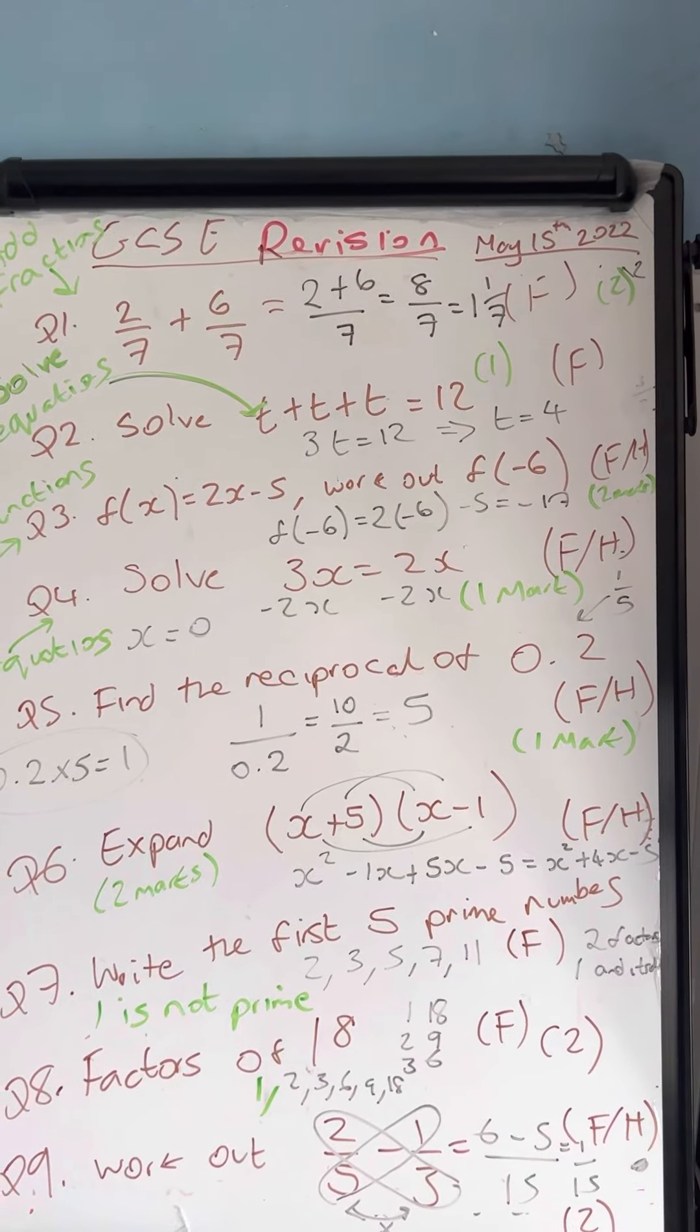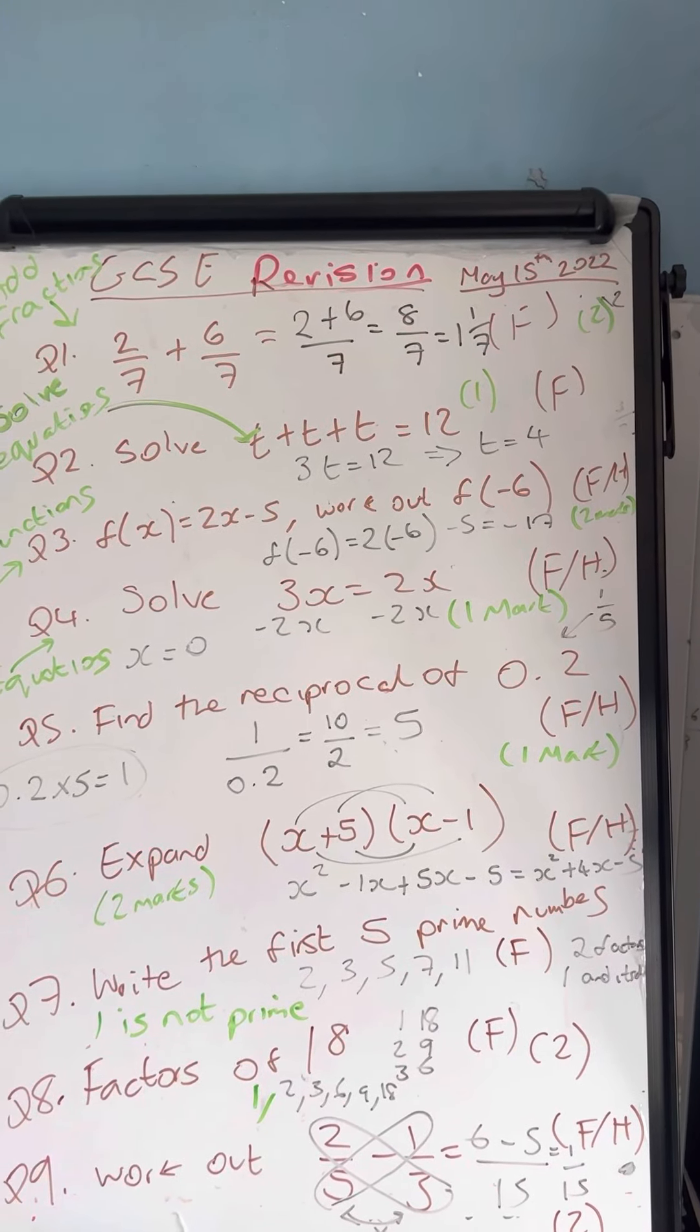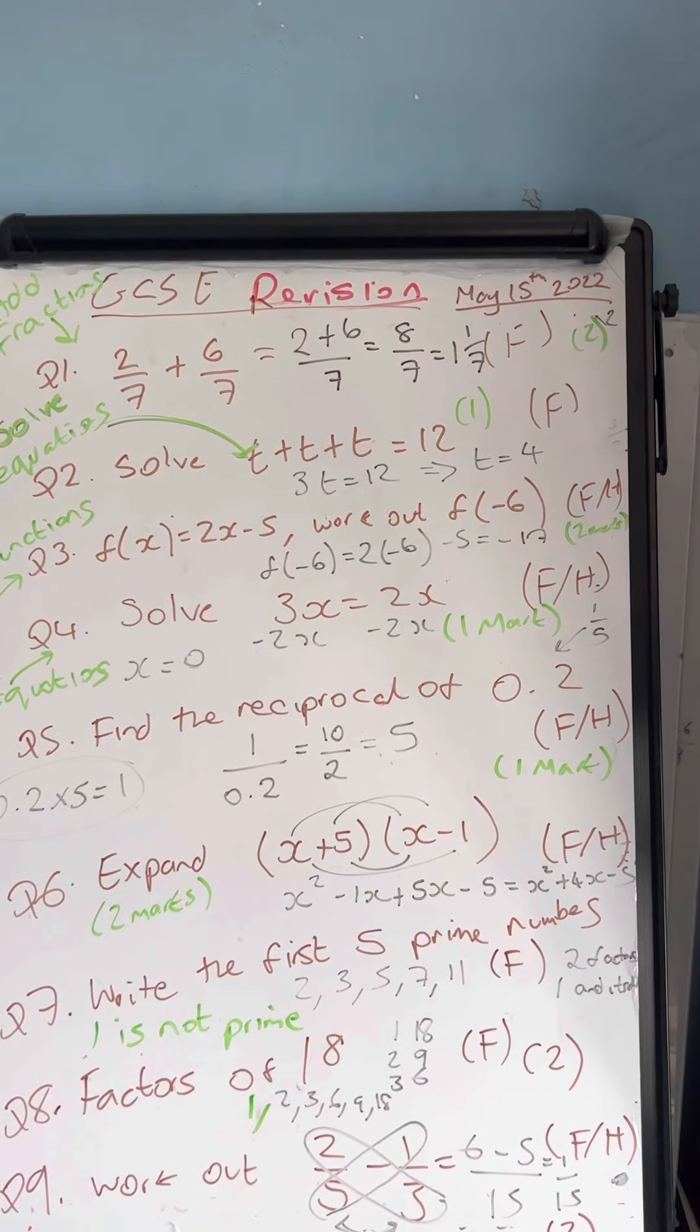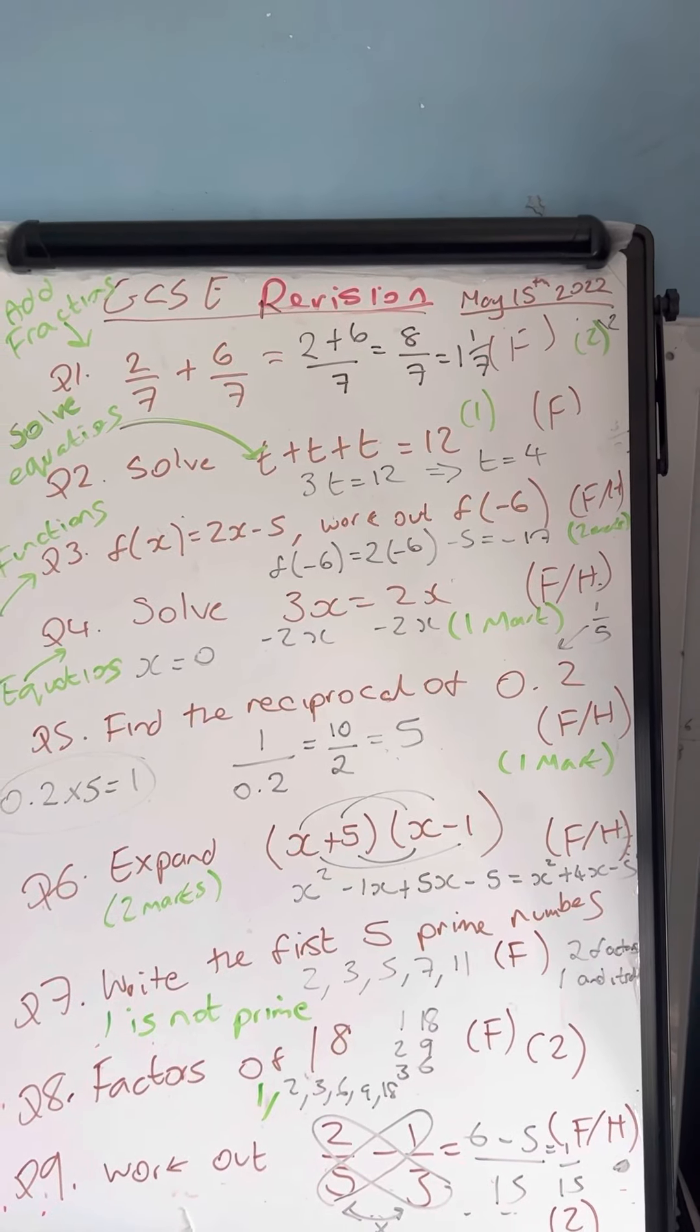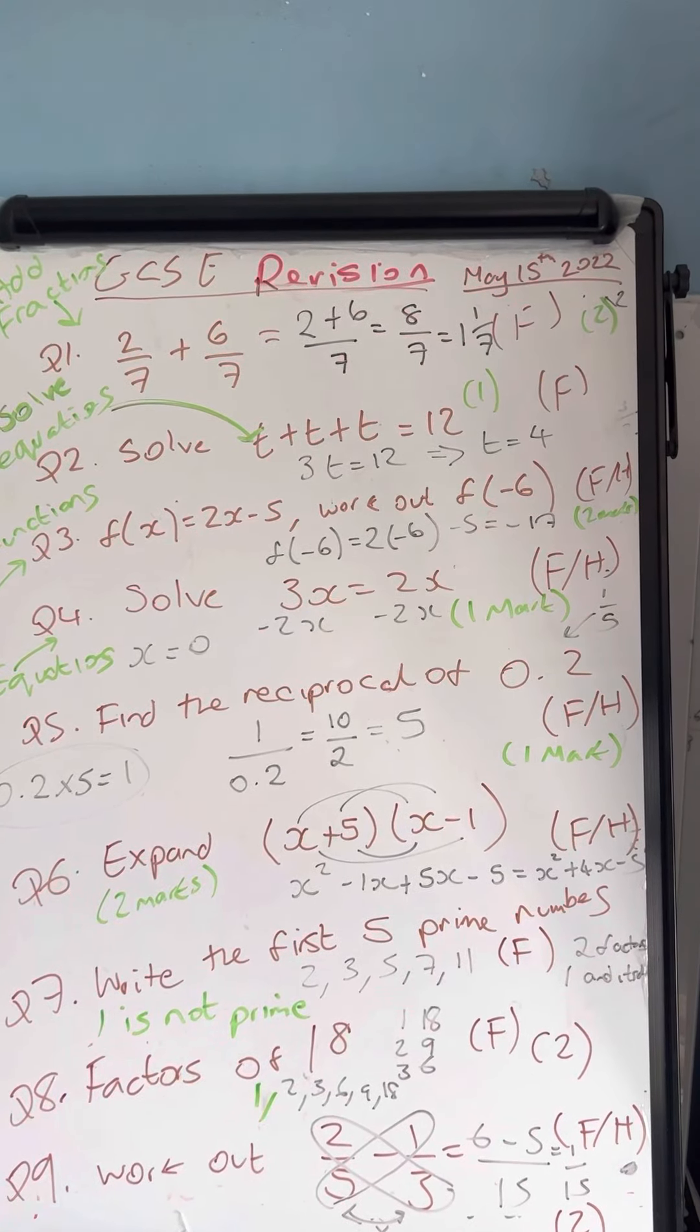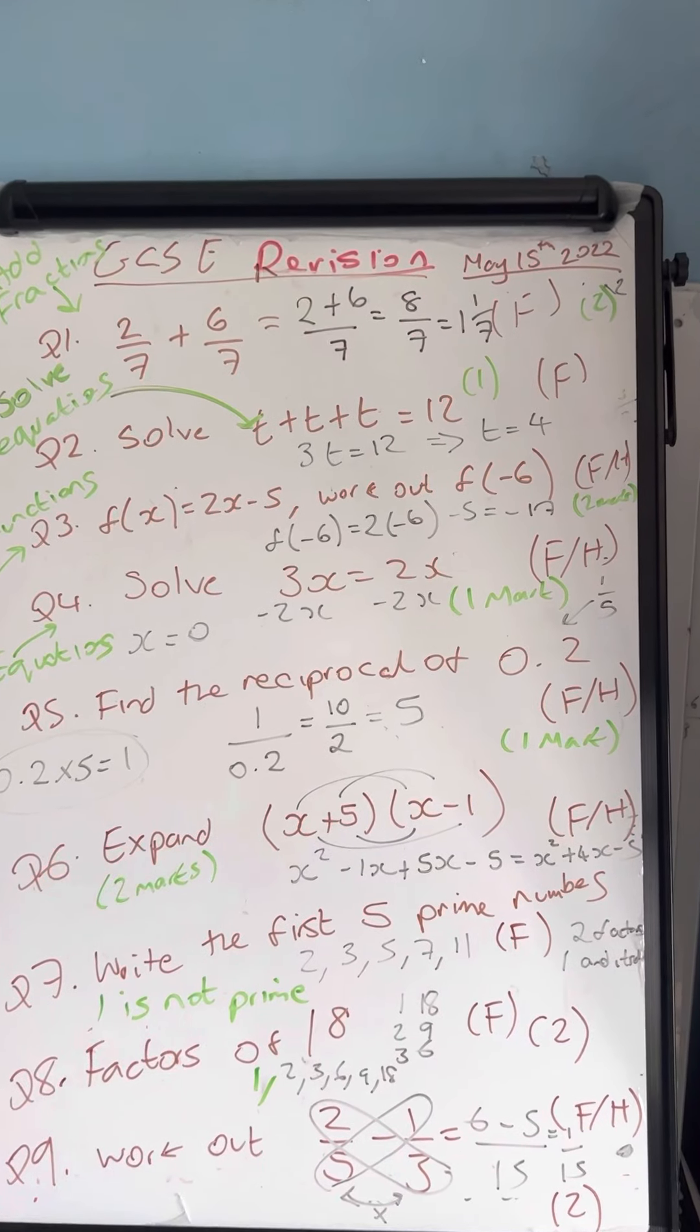This is question number four. Solve this equation: 3X is equal to 2X. If I subtract 2X on both sides, then I get 1X, or just X is equal to 0. Because 2X take away 2X on the right-hand side becomes 0. 3X minus 2X is just equal to X, or 1X.